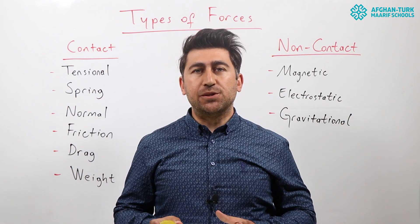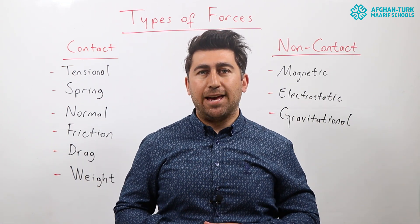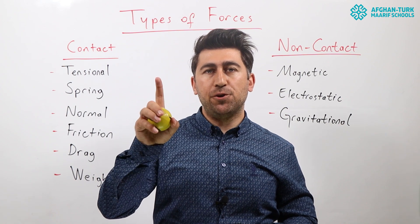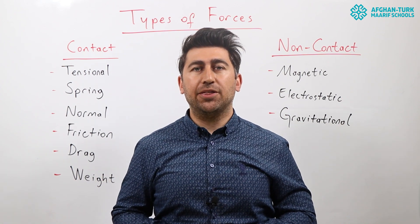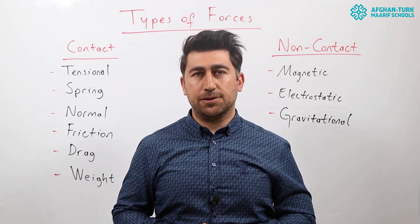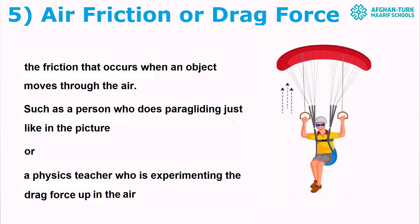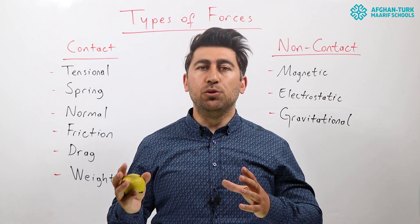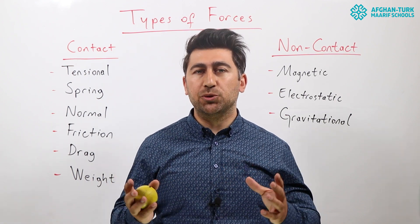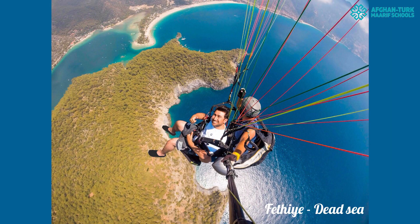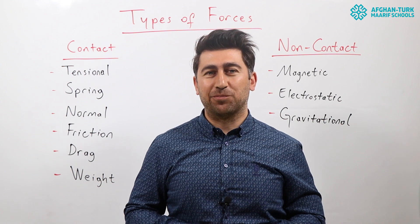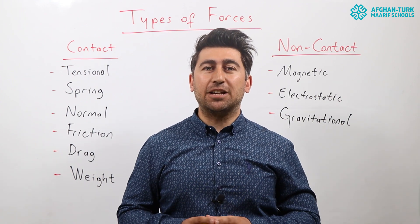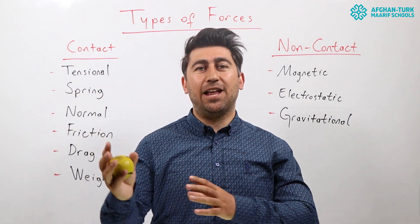Friction force is always in the opposite direction of motion, and it depends on two things: the weight of the object and the roughness of the surface. Air friction force is the friction that occurs when an object such as a ball moves through air, or when parachuting in the air. This is a picture from Fethiye, Turkey at Dead Sea, where you will see a physics teacher experiencing air force up in the air. Thanks to air friction, we can jump from high mountains and land on a beach.